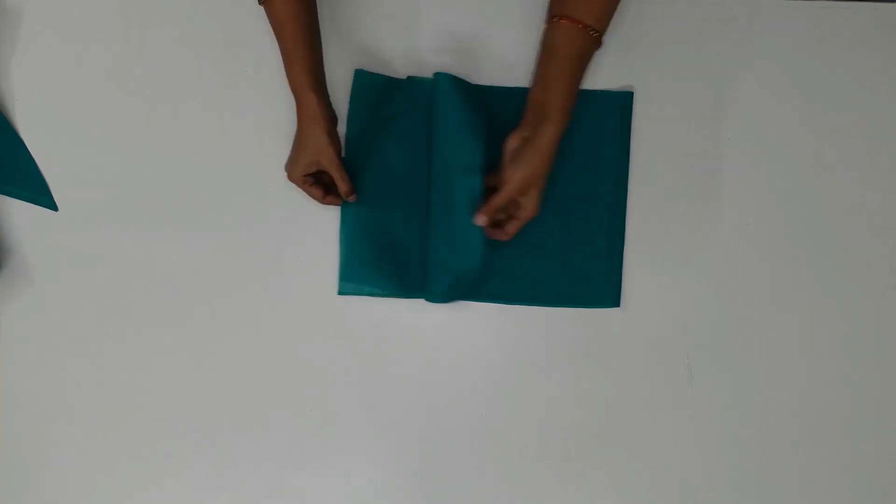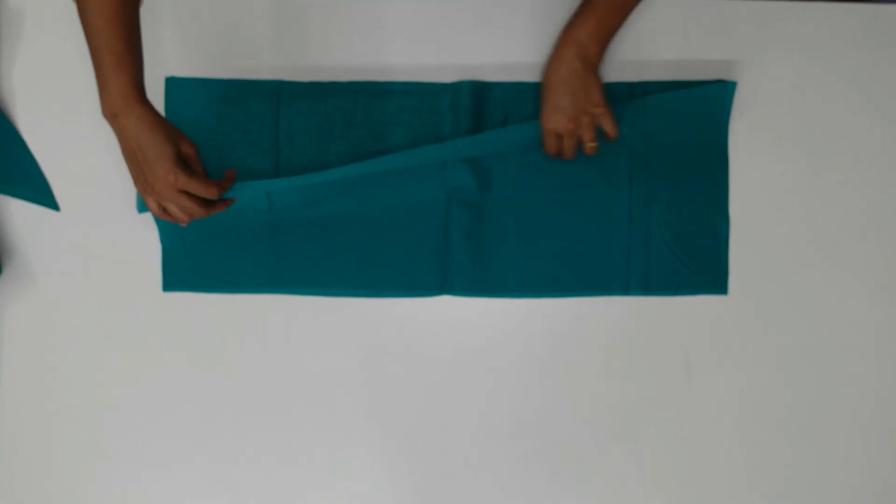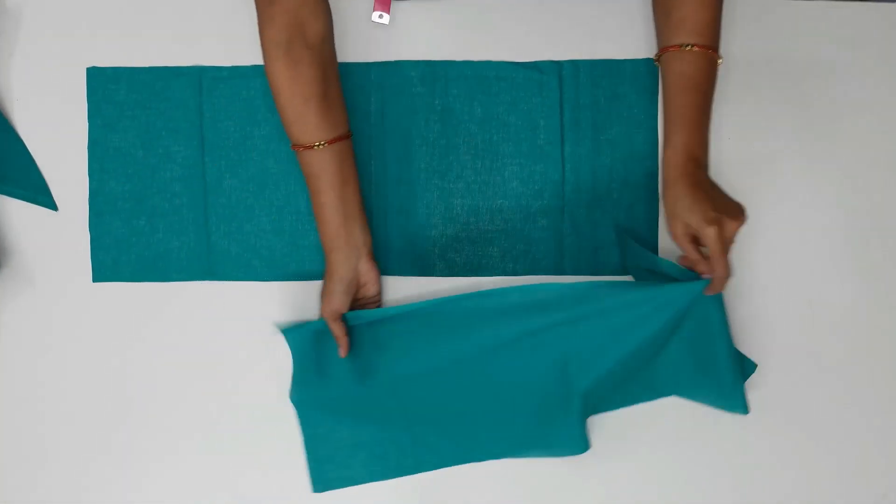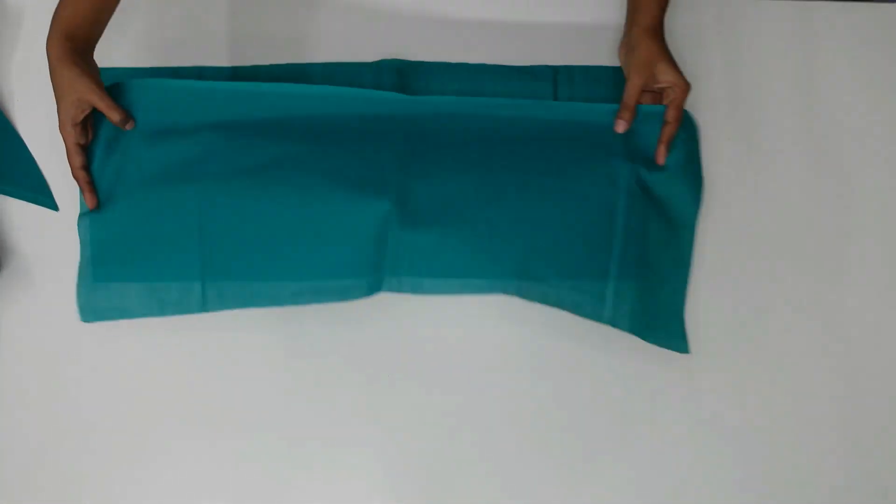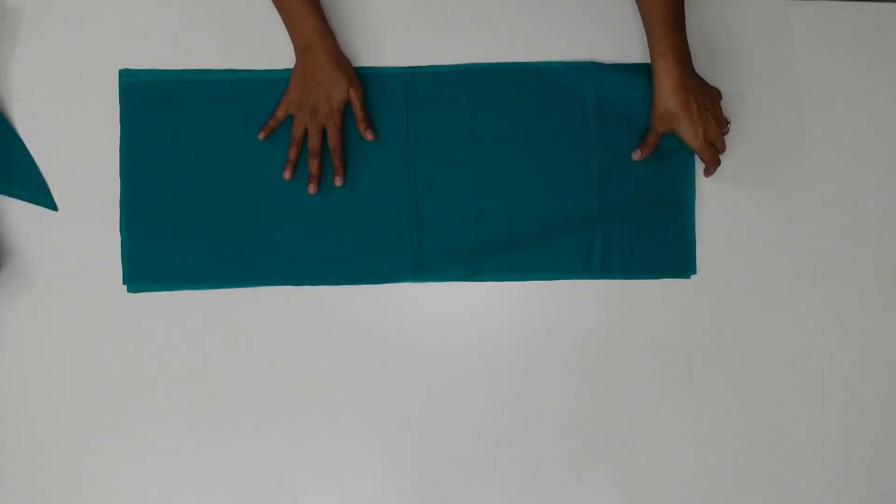Now if you open, you will find 2 layers of rectangle piece. So the waistband material is ready now.